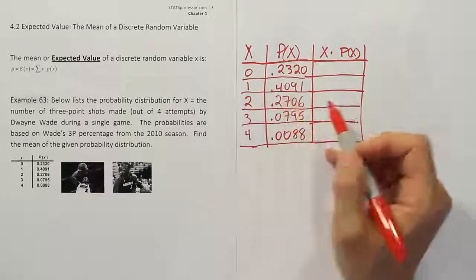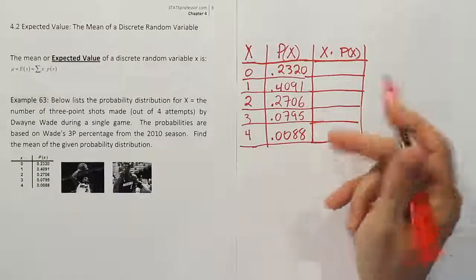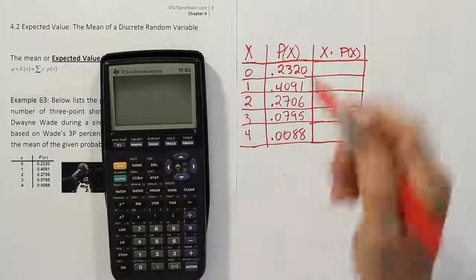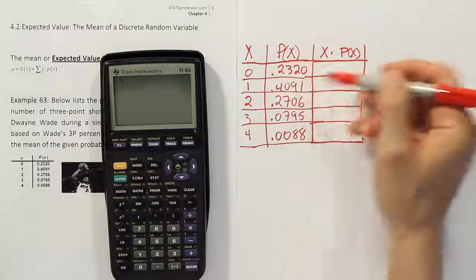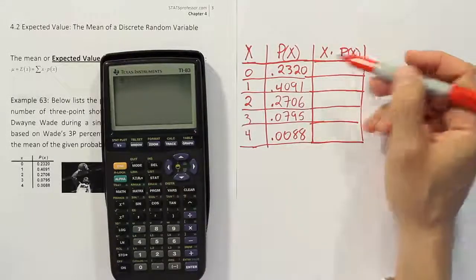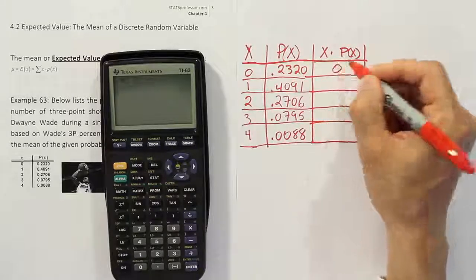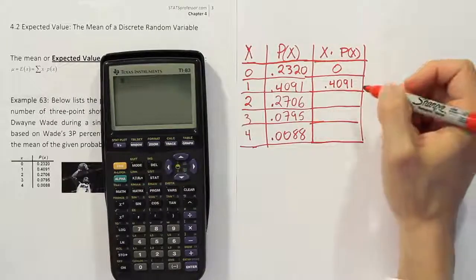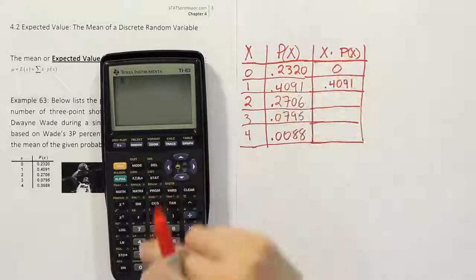From there, what we want to do is multiply these straight across to see what the totals are for each one. So we're literally going to go straight across multiplying each of these numbers together to produce the x times p of x column. Now 0 times this will give you 0, and 1 times that will just give you the same number, 0.4091. Let's continue on here.